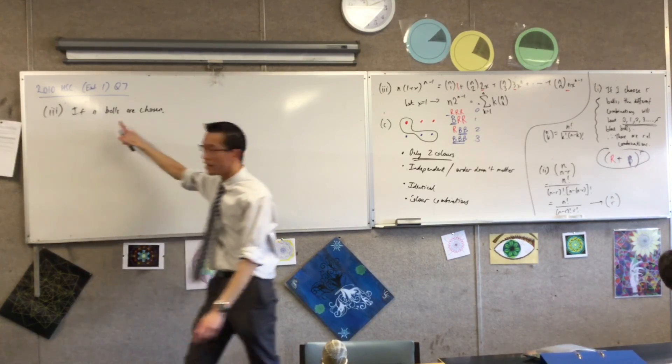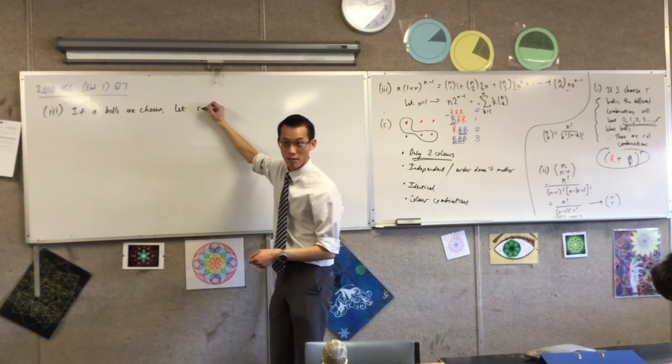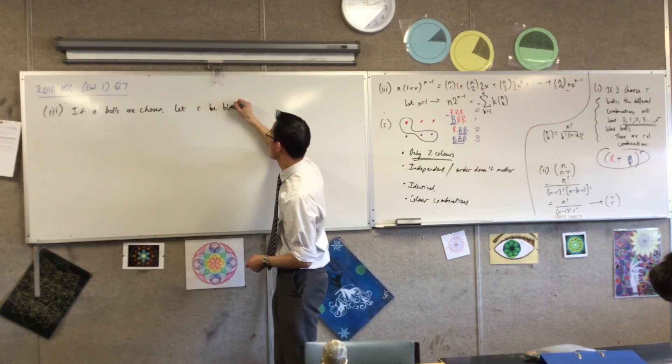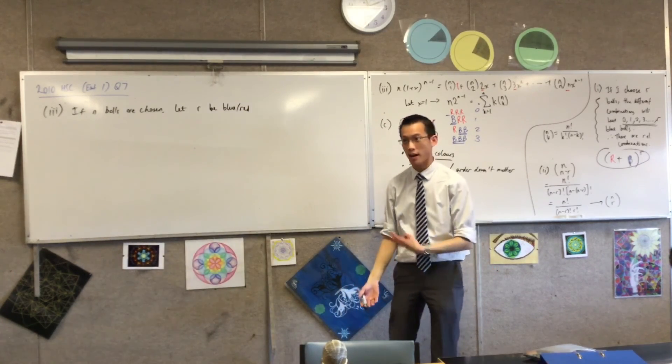So what I'm going to say is, if n of them are chosen, let r be blue-red, which means the remainder, that's n take away r, are white.